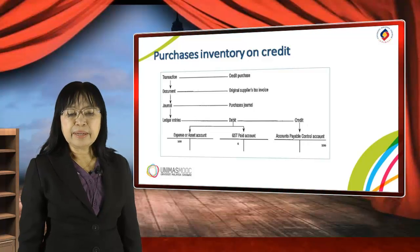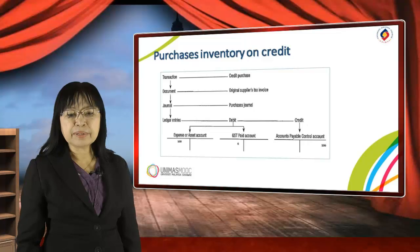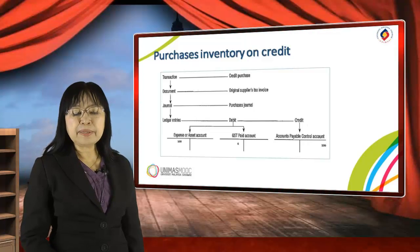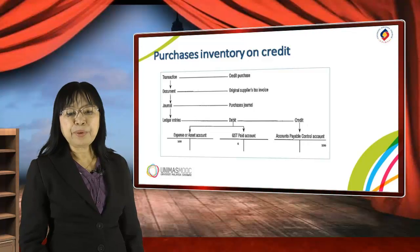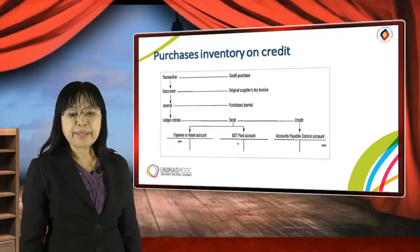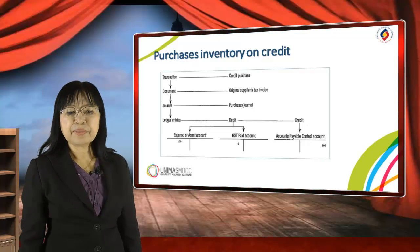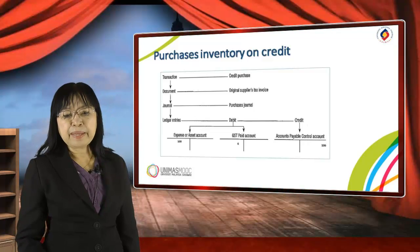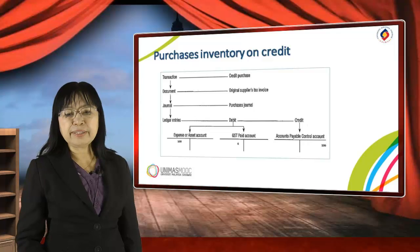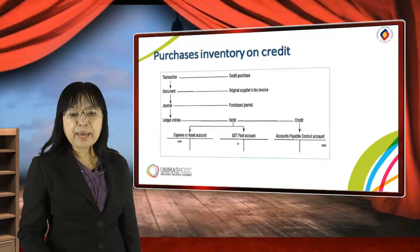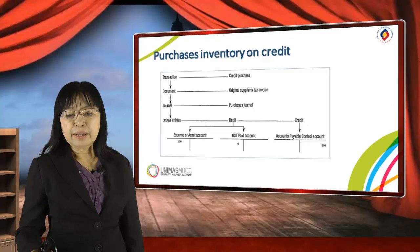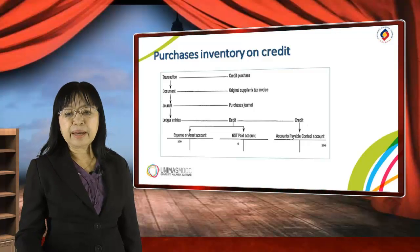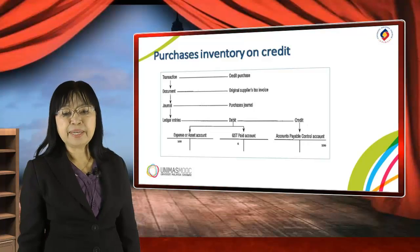Now let's look at the ledger entries — debit and credit. Debit entries are expenses or asset accounts. If we incur an expense or service expense on credit, that will be an expense account. If we bought assets on credit, that will be an asset account on the debit side. Regarding that asset or expense, we have to pay GST — that is GST paid — which we will record in the GST paid account as a debit. Together, the expense or asset value plus GST will be credited in the accounts payable control account in the general ledger.